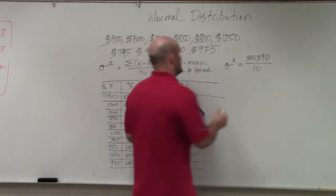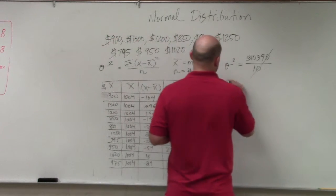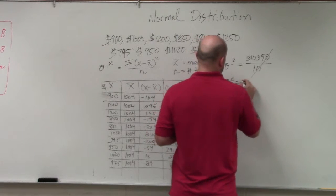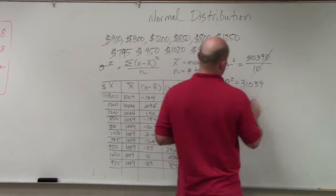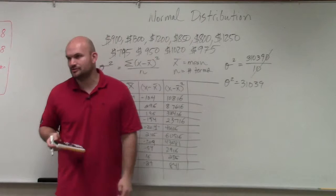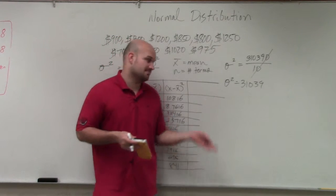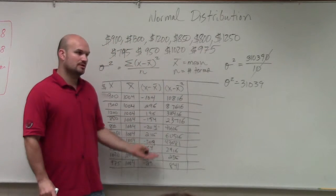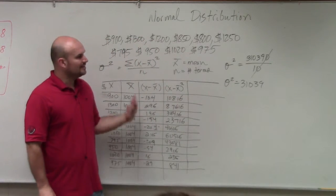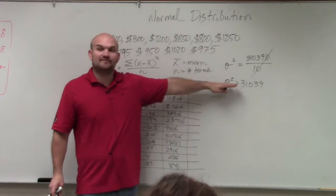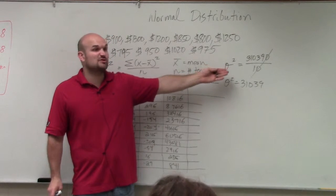So now when I go ahead and divide by 10, I get my variance is 31,039. So my recommendation is if you didn't get the correct answer, make sure you guys go back through this table. Now, that's the definition of variance. And that's all you guys have to do for variance.